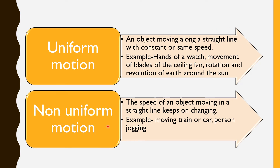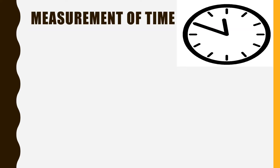Next is non-uniform motion — the speed of an object moving in a straight line keeps on changing. Examples include a moving train or car, and a person jogging — their speed always varies and doesn't remain constant. This is the difference between uniform and non-uniform motion.